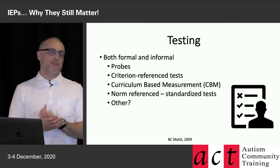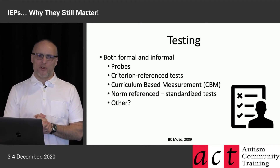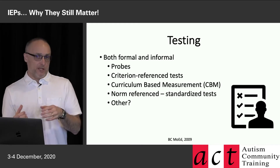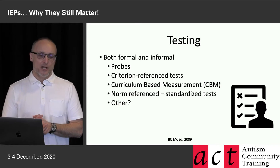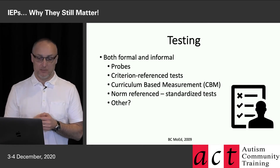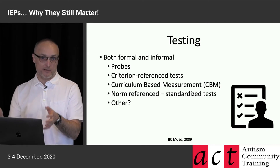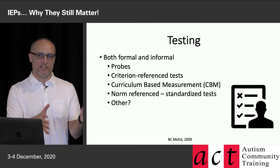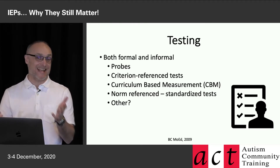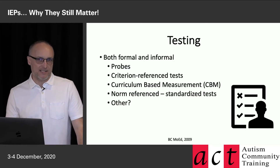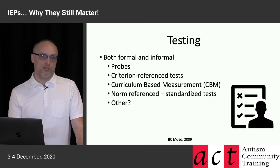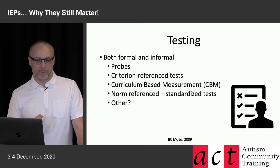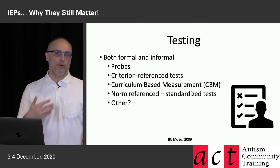You can also do criterion-referenced tests, which compare the child to themselves over time and are sensitive to change. Curriculum-based measurement can be very helpful. For example, if we're wondering about a grade two student's literacy, you can ask the grade two teacher to make up a 10–20 question probe — a worksheet you'd expect all students to do reasonably well on. Give it to the whole class, see how they do, then give it to your student and make a quantitative comparison. Then there's norm-referenced or standardized testing, which could involve a referral to a school or private psychologist for an academic assessment to determine how the student is performing relative to their chronological age.